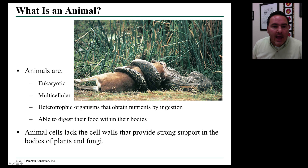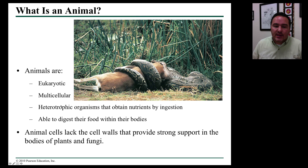And finally, animals. Animals are always eukaryotic and multicellular, and for the most part they're heterotrophic, meaning they ingest their food inside of their bodies.